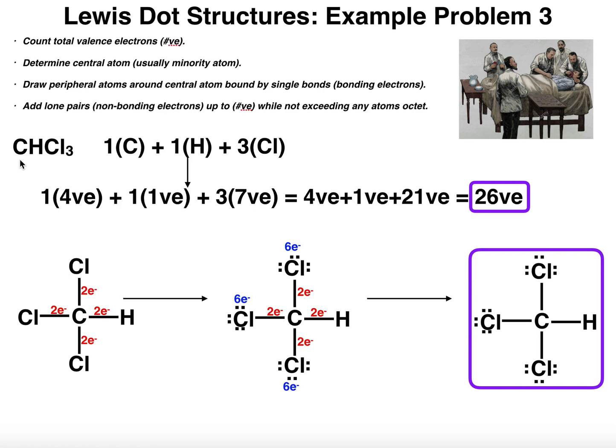So hydrogen really can never be the central atom. The central atom in this case will be carbon. I put carbon as my central atom, shown down here, and then for step three, I draw all the peripheral atoms around the central atom bound by single bonds, which are two bonding electrons per single bond. So I have three chlorines, one here, a second one here, the third down here at the bottom, and then I'll put the hydrogen on the right side.